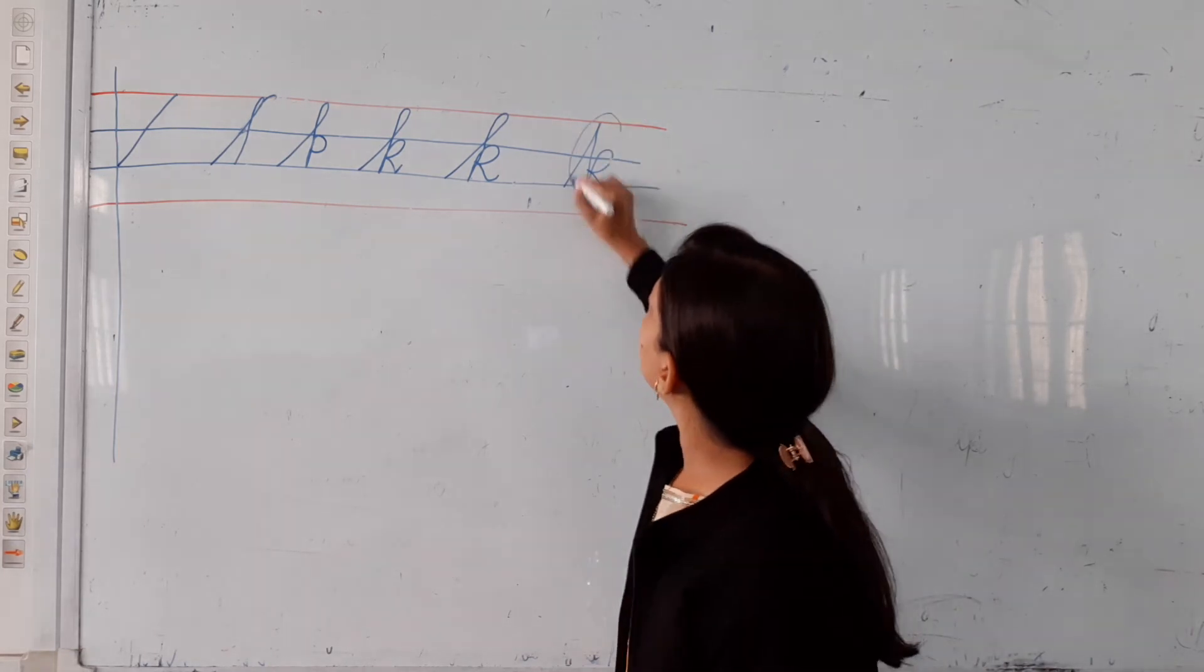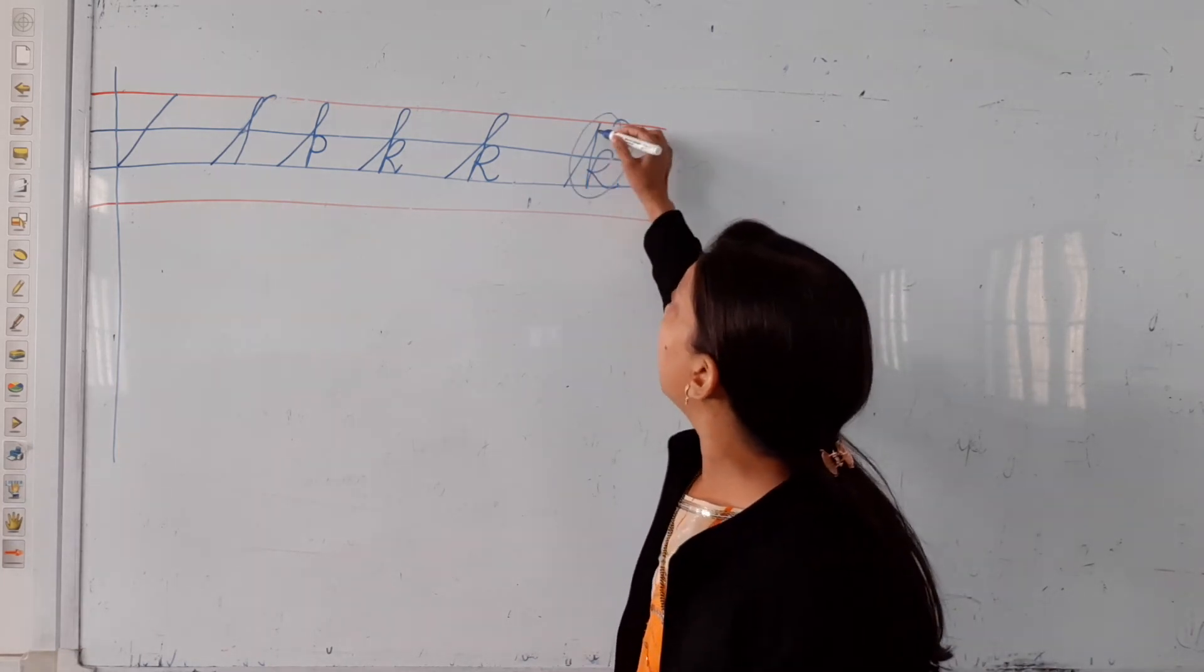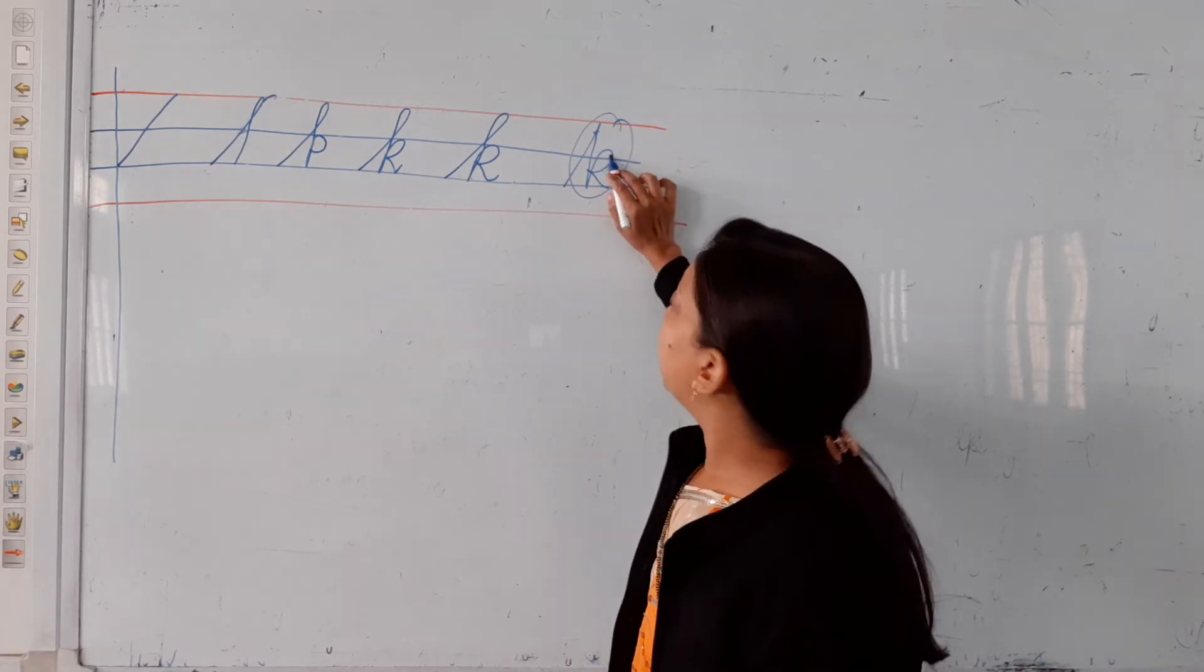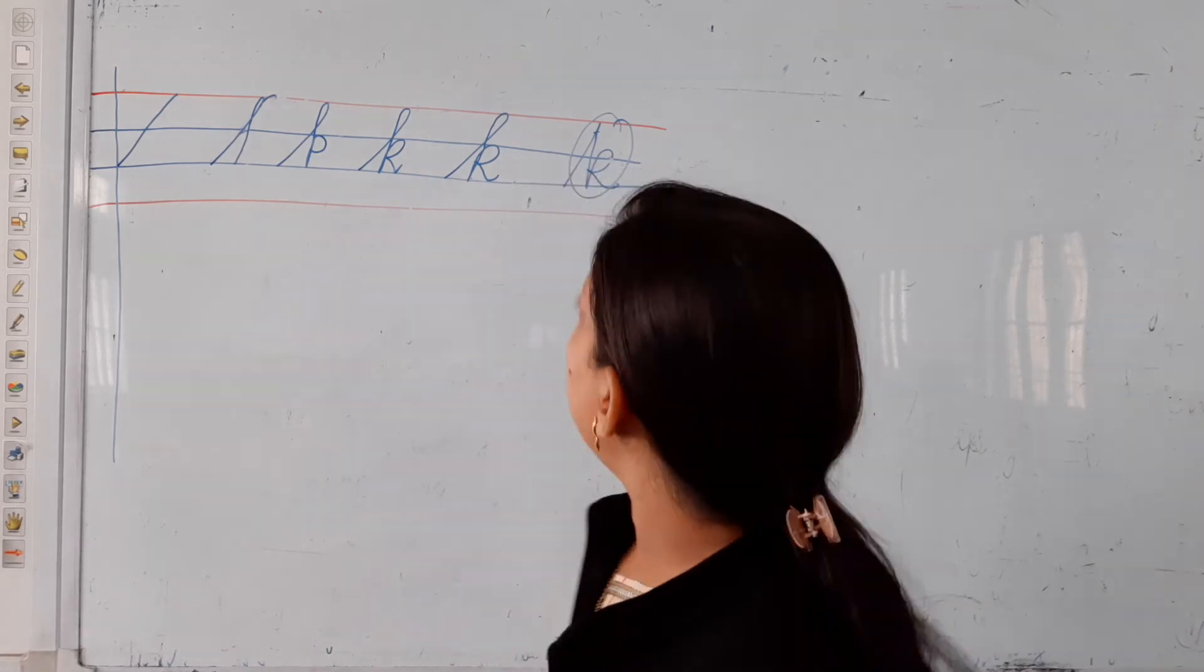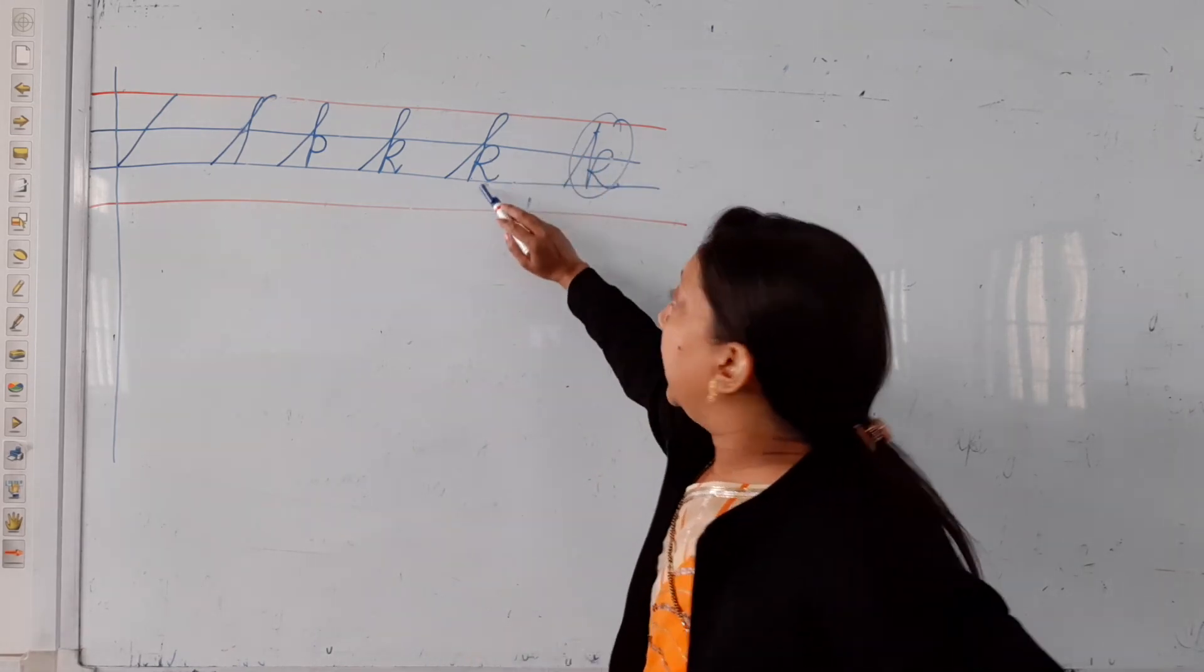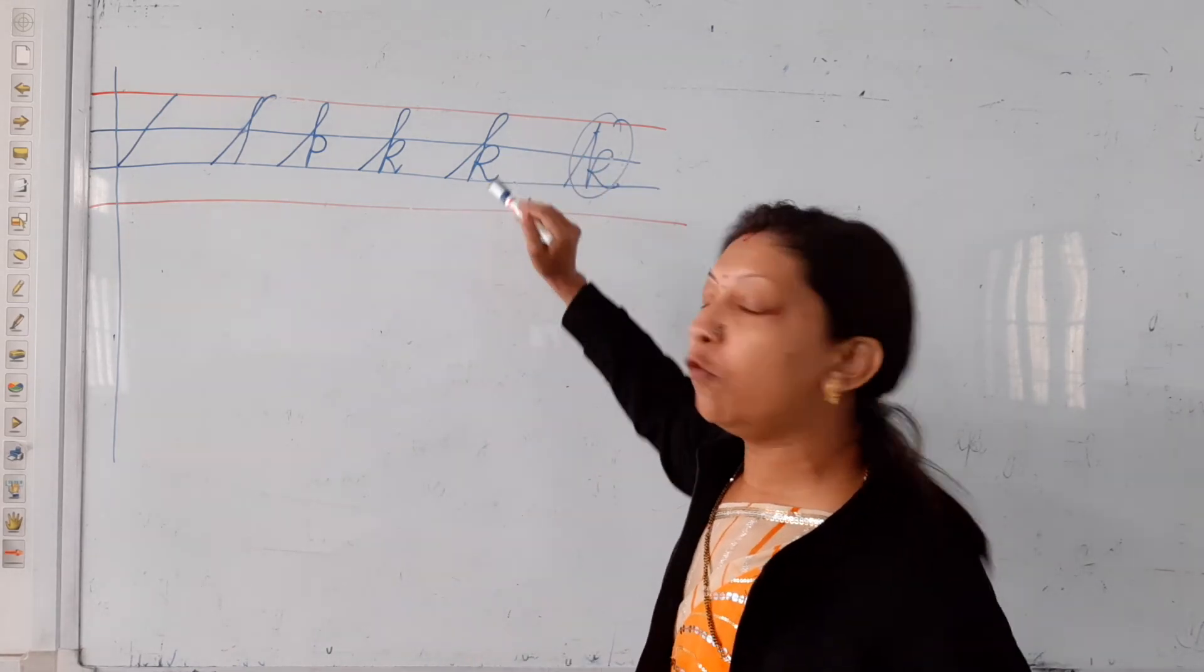Line is wrong. Here is the blue line, and here is the blue line. So this is wrong. So always touch the red line and blue line and make the curve properly.